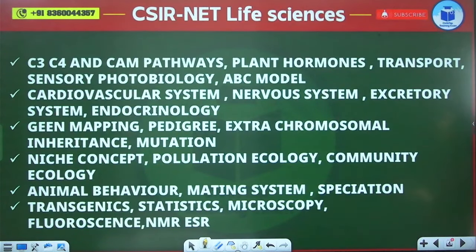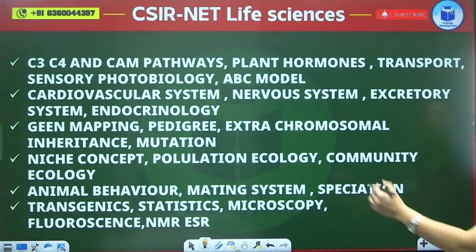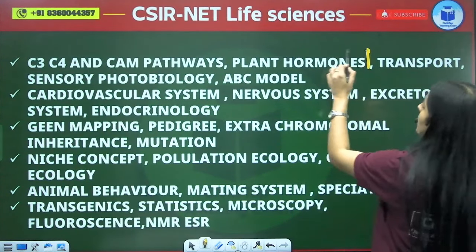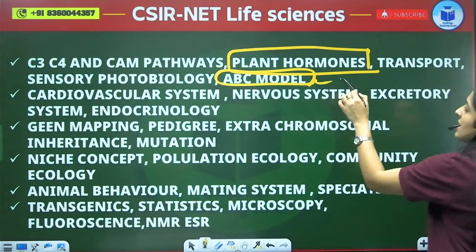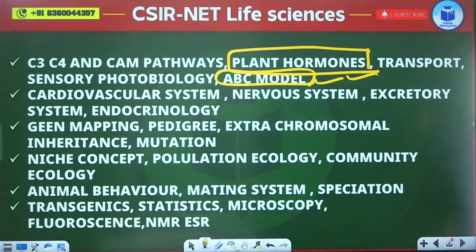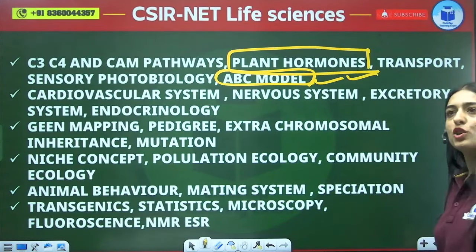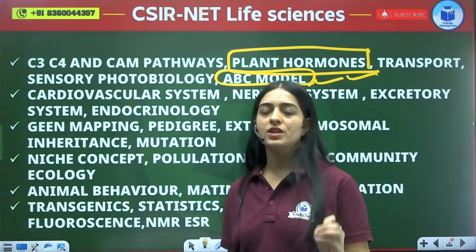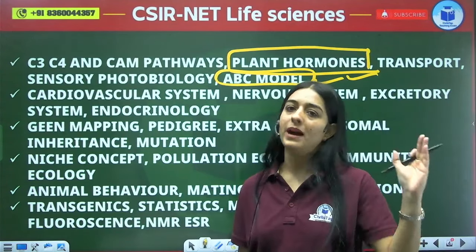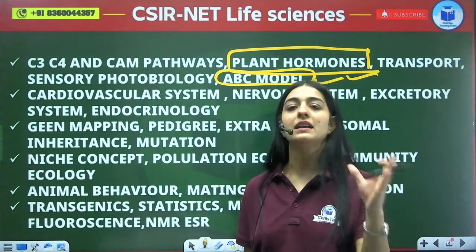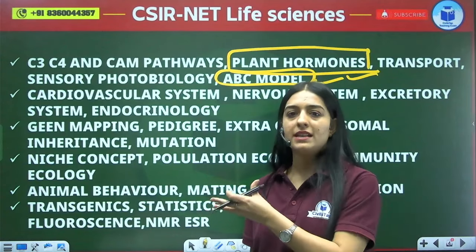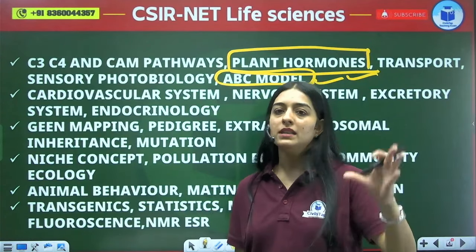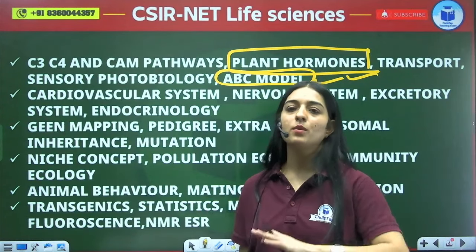Next is plant physiology. C3 and C4 pathways, plant hormones, and the ABC model — these are topics where you will see questions with surety, likely in Part B or Part C. These are among the most important topics to cover.